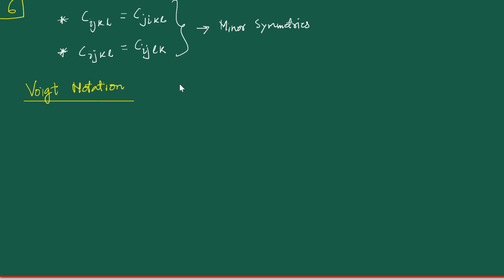The Voigt notation is widely used. In this notation the following mappings are used — the idea is really quite simple. Whenever we have the index pair 1 1 appearing, this is mapped to just 1. Similarly, when we have the index pair 2 2, this is mapped to just 2 — just a shorthand way of writing.